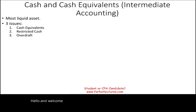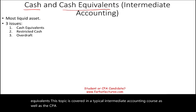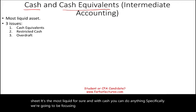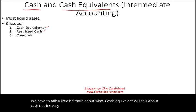Hello and welcome to this session in which we will discuss cash and cash equivalents. This topic is covered in a typical intermediate accounting course as well as the CPA exam. Cash is one of the most important assets on the balance sheet — it's the most liquid, and with cash you can do anything. We're going to focus on three issues: cash equivalents, restricted cash, and overdraft.